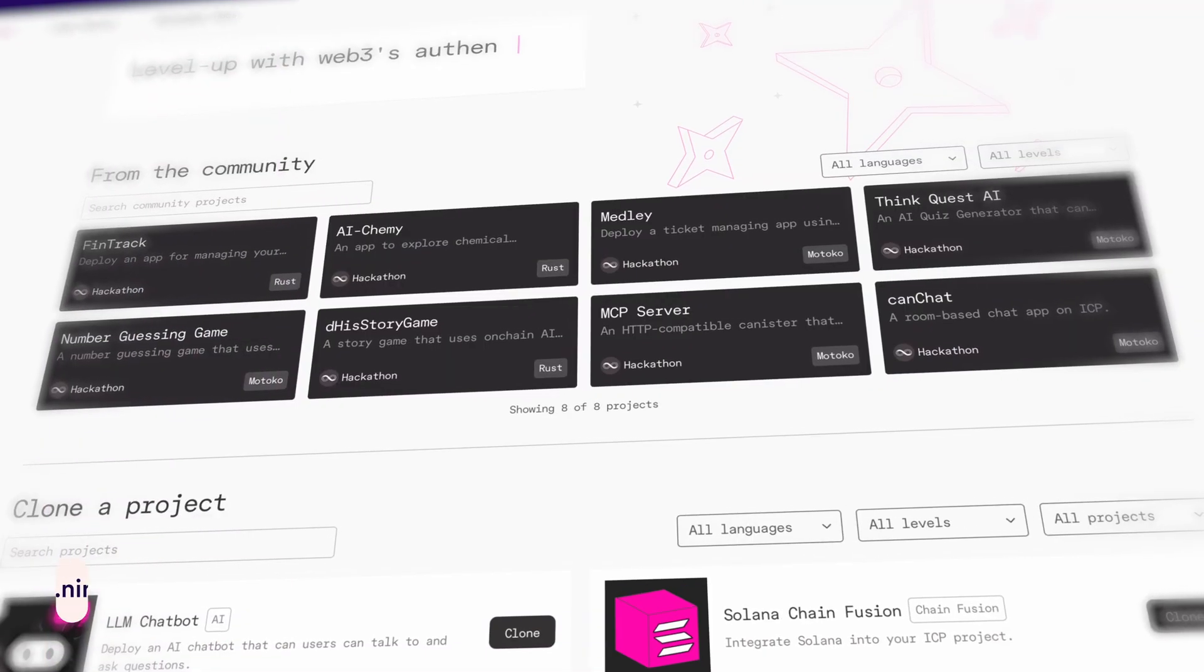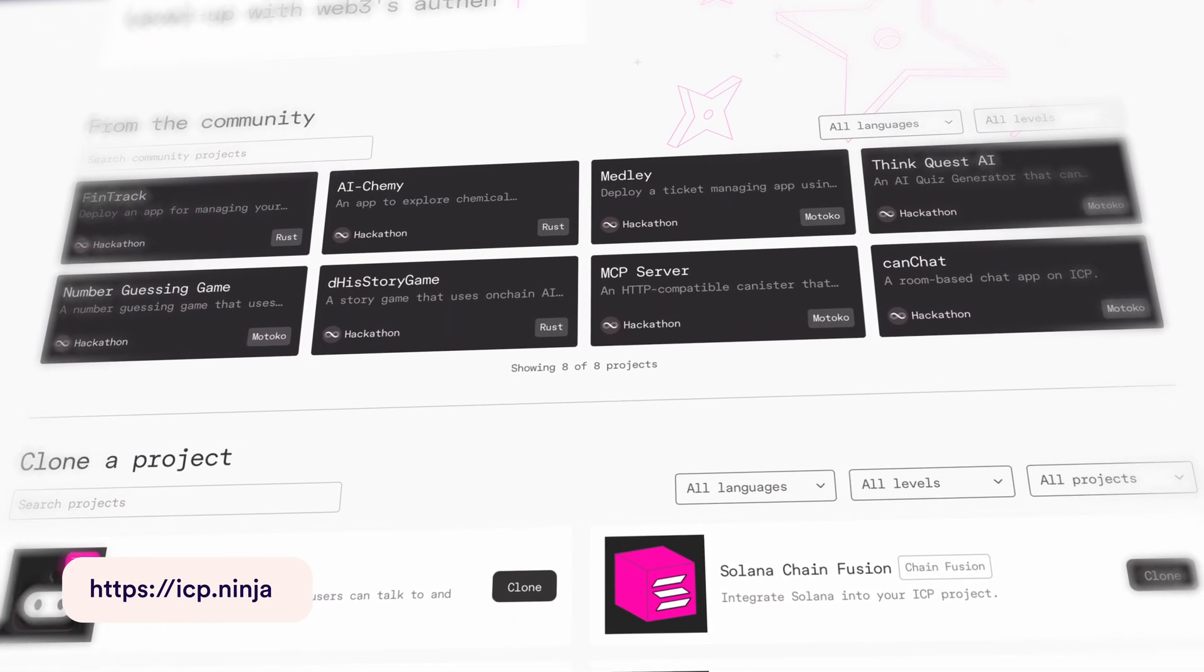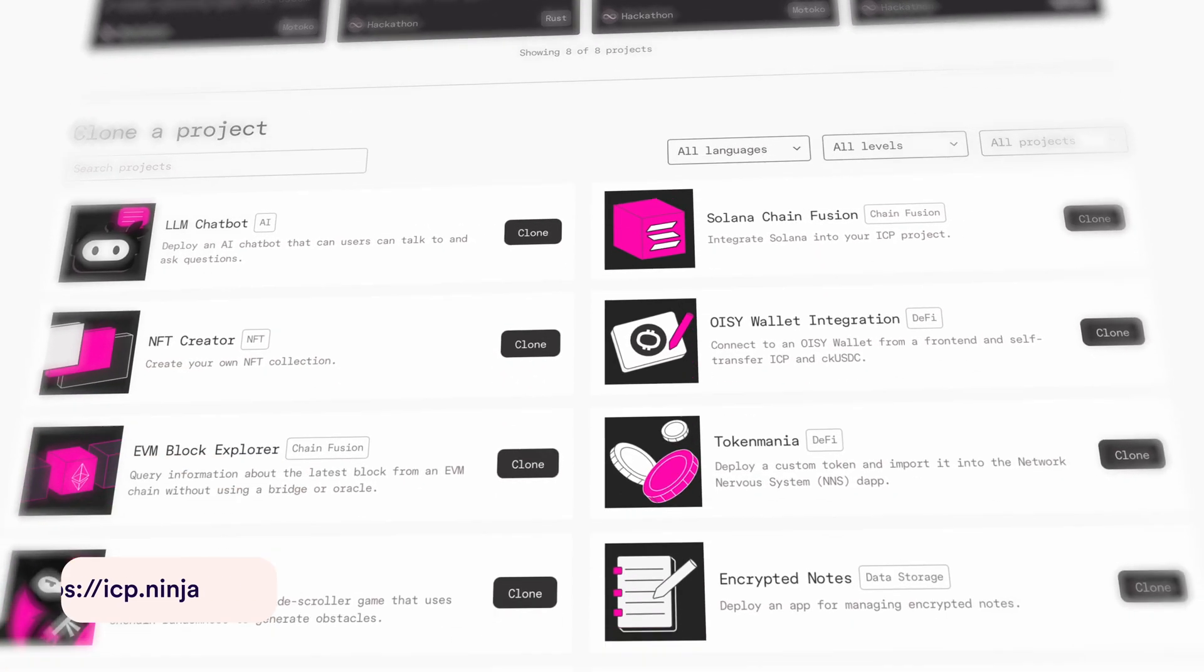If you want to build your own dApps, you can try ICP Ninja, which is a web IDE that lets you code and deploy smart contracts directly in your browser. Of course, you can also download the SDK and check out some of the projects in the examples repository.